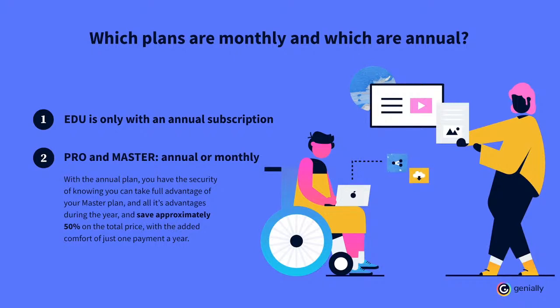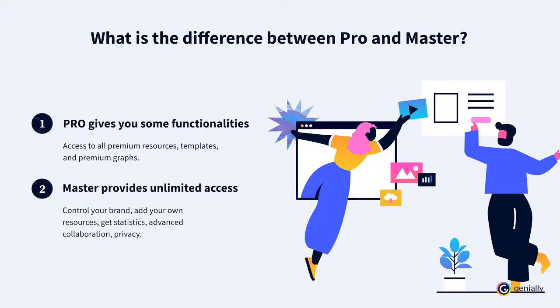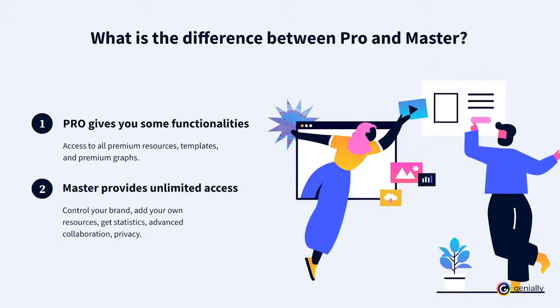The master and pro plans are available to be paid both on a monthly basis as well as an annual one. With the annual plan, you have the security of knowing that you can take full advantage of your master plan, and all of its advantages, during the year. And you save approximately 50% of the total price, with the added comfort of just one payment per year. What's the difference between pro and master? With the pro plan, you have access to some of the premium functions, such as all of the resources, templates, and premium graphs and charts available in Genially. However, if you're looking for an unlimited plan that gives you full control of your brand, the master plan is for you.